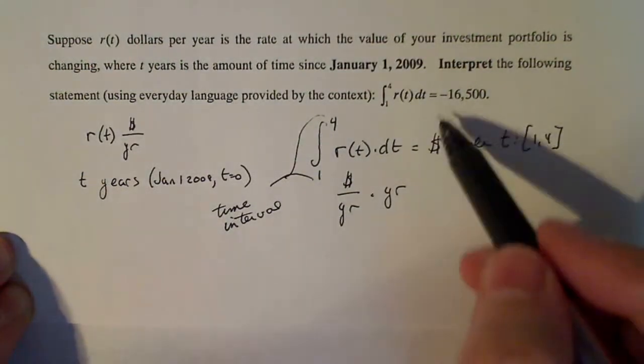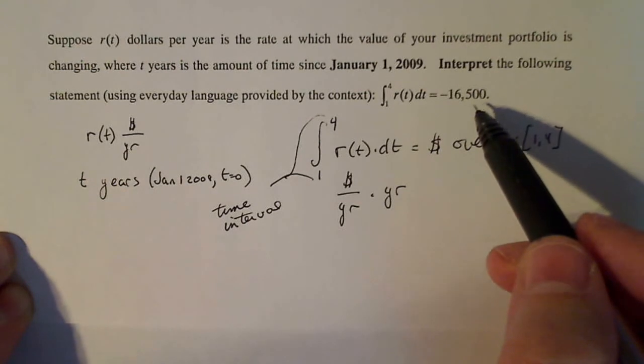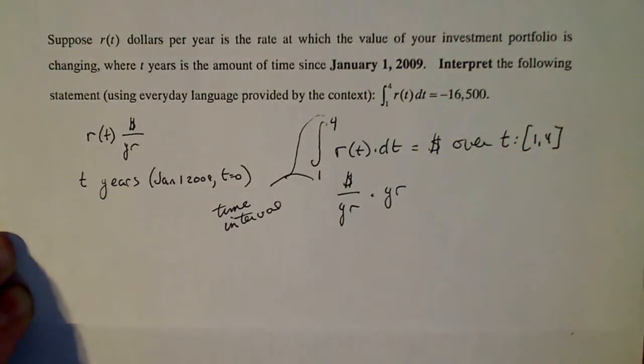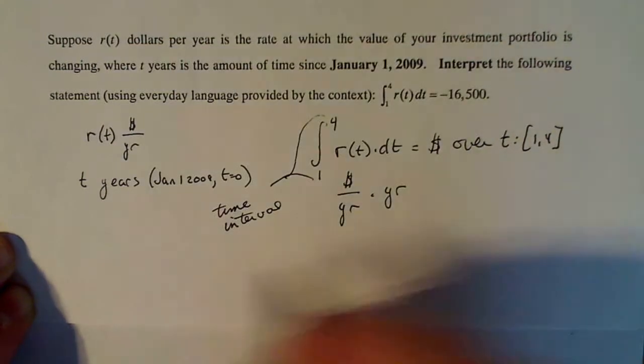Now, the problem says the amount of dollars is minus 16,500. So if you're going to use everyday lingo, like normal people on the street would, you would say, okay...